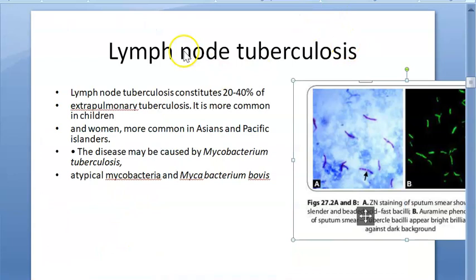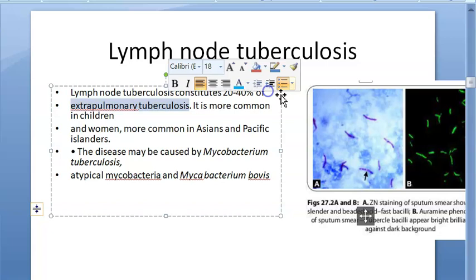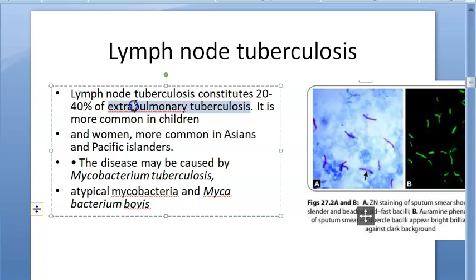Lymph node tuberculosis constitutes 20 to 40 percent of extra-pulmonary tuberculosis — meaning it affects somewhere outside the lungs. It is very common in children, women, Asians, and Pacific Islanders. The disease is caused by mycobacterium tuberculosis, but it can also be caused by atypical mycobacteria and mycobacterium bovis.